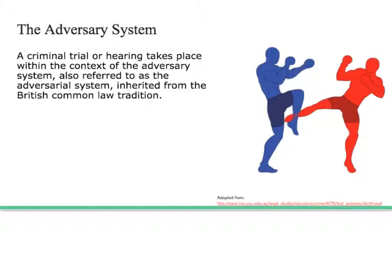Under the adversary system of trial there are two opposing parties: the prosecution and the defence. Both present evidence for determination by an independent third party. The independent third party depends on the court and will be a magistrate or judge and jury.